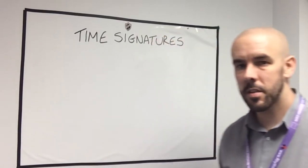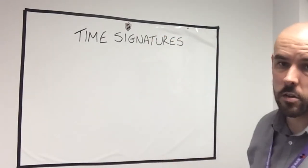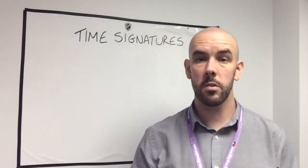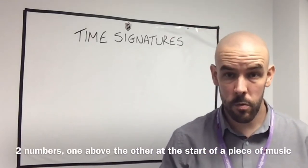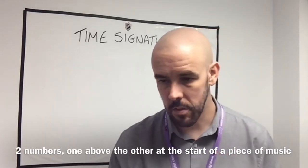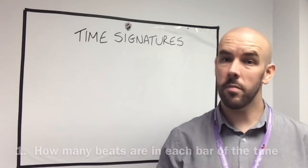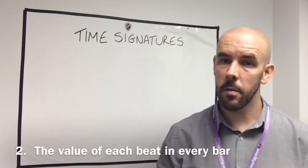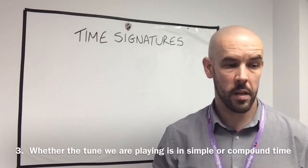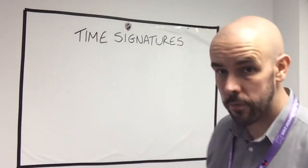Hi guys, welcome to today's lesson on time signatures. The time signature is basically the two numbers placed at the start of a piece of music, and it tells you three very important things: how many beats there are per bar, the value of each of those beats in the bar, and whether the tune we're playing is in simple time or compound time. So let's go through it.